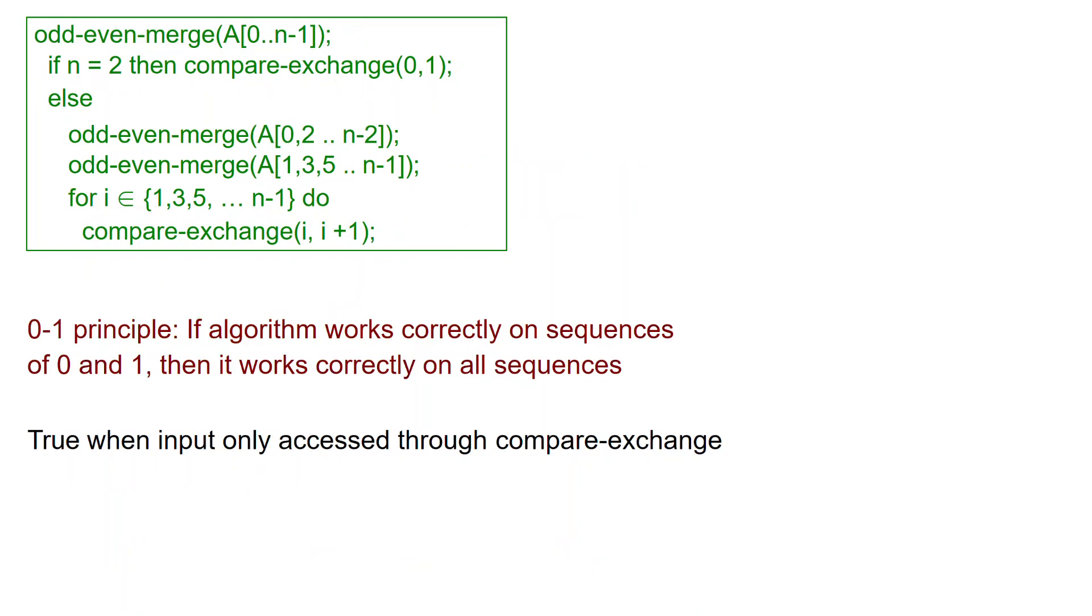Here again in the box is the odd even merge operation. Let's try to get some intuition on why this thing works. Something very powerful in the theory of oblivious sorting is the so-called 0-1 principle. The 0-1 principle says that if you have an algorithm which is oblivious and works correctly on every sequence of 0 and 1, so we only allow 0 and 1 as elements, then it's going to work correctly on every sequence.